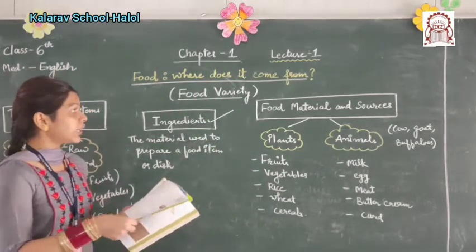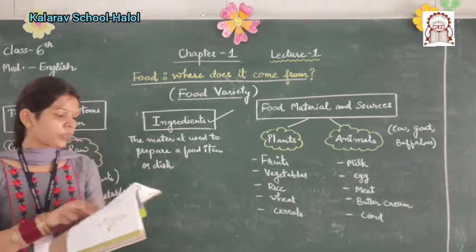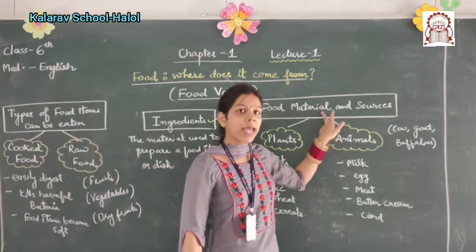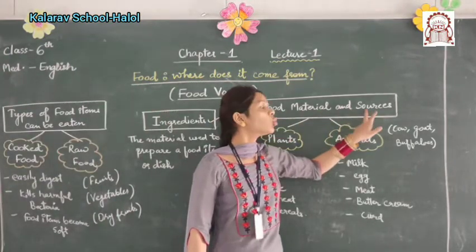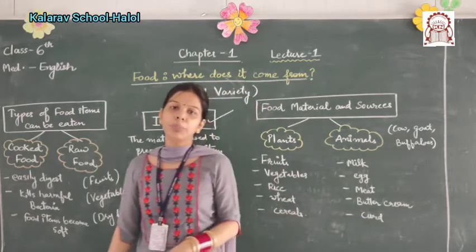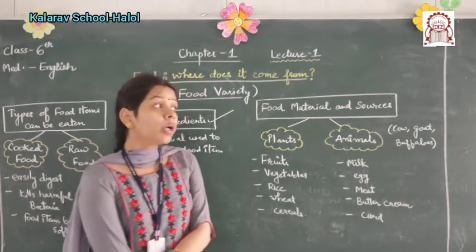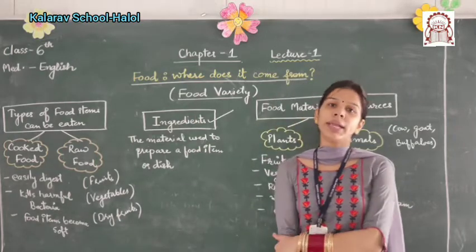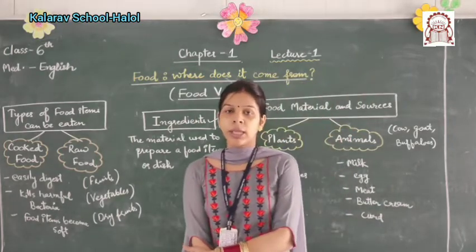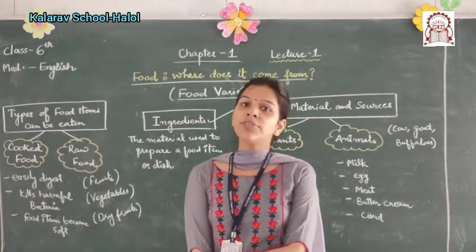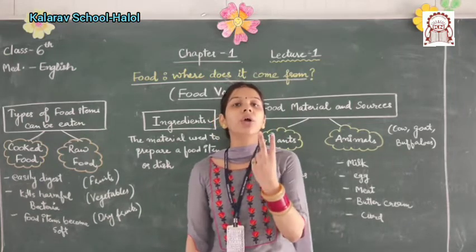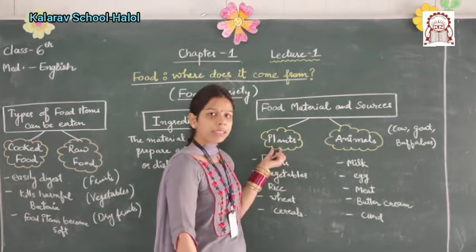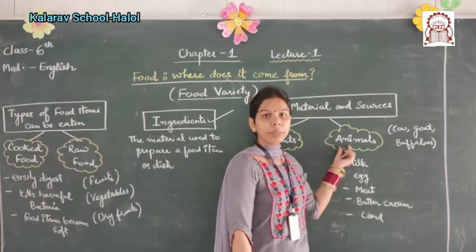The next topic is: what are the food materials and the sources of those food materials? How do we obtain these food items? The sources of these food items are of two kinds: number 1, plants, and number 2, animals.